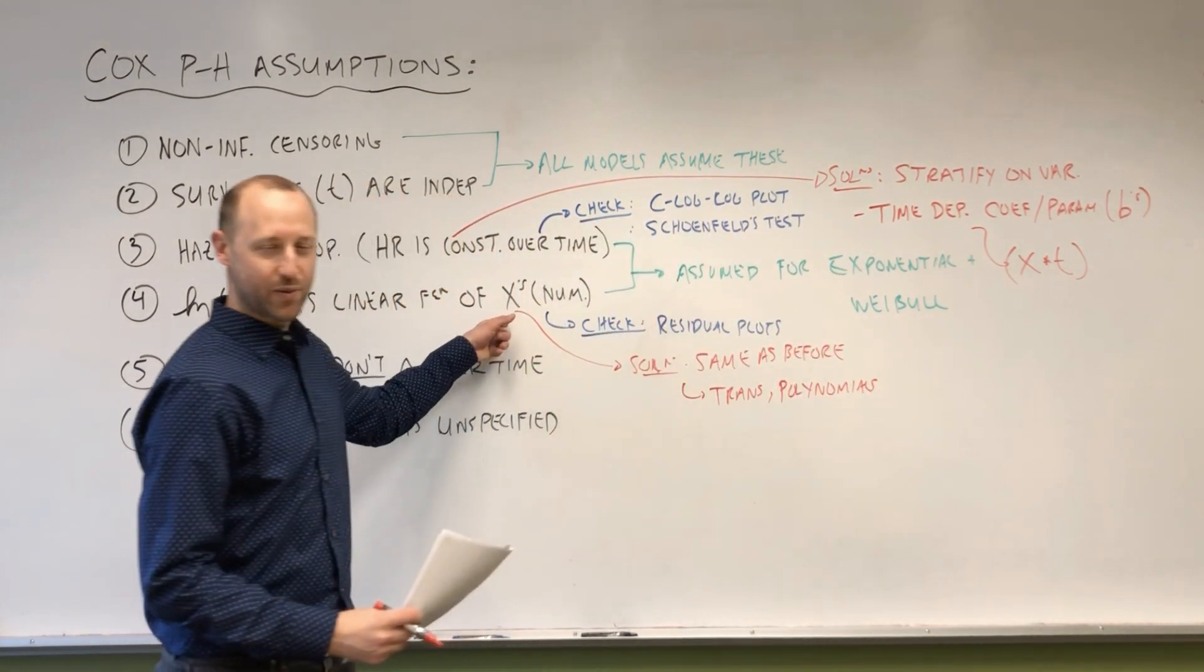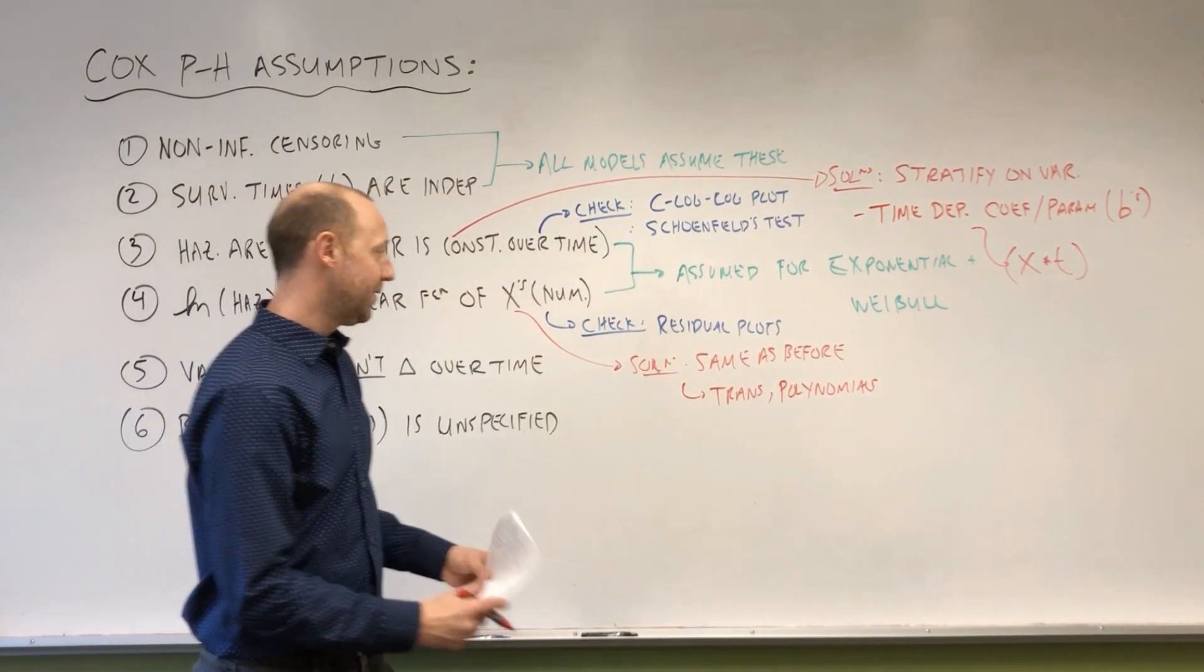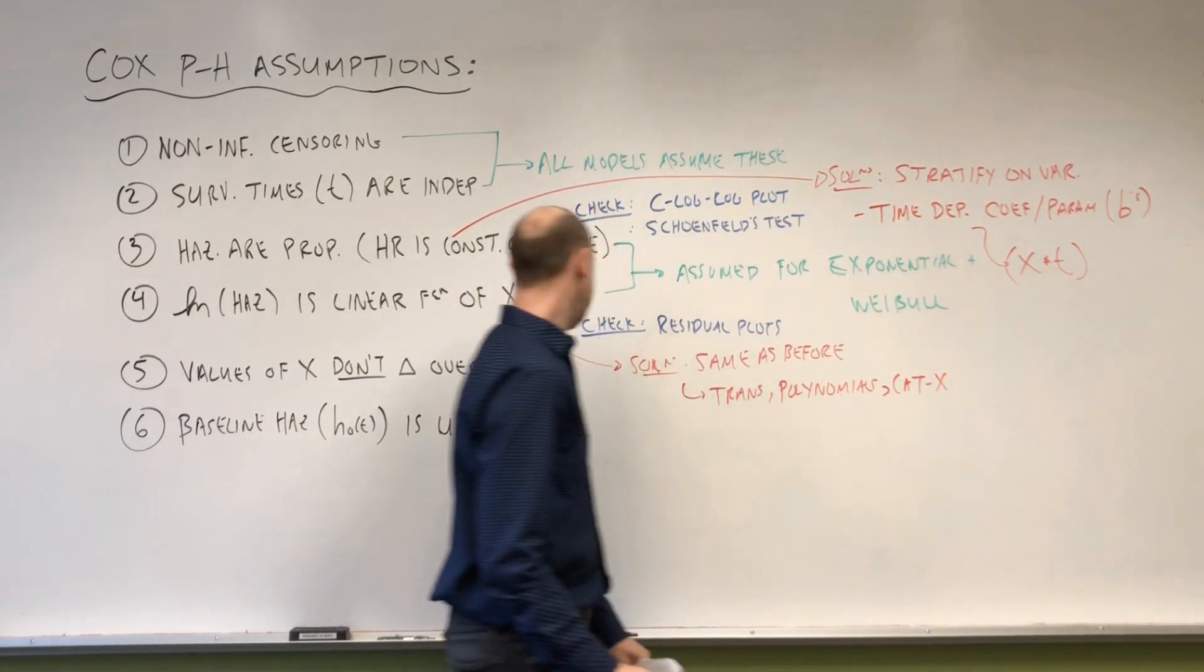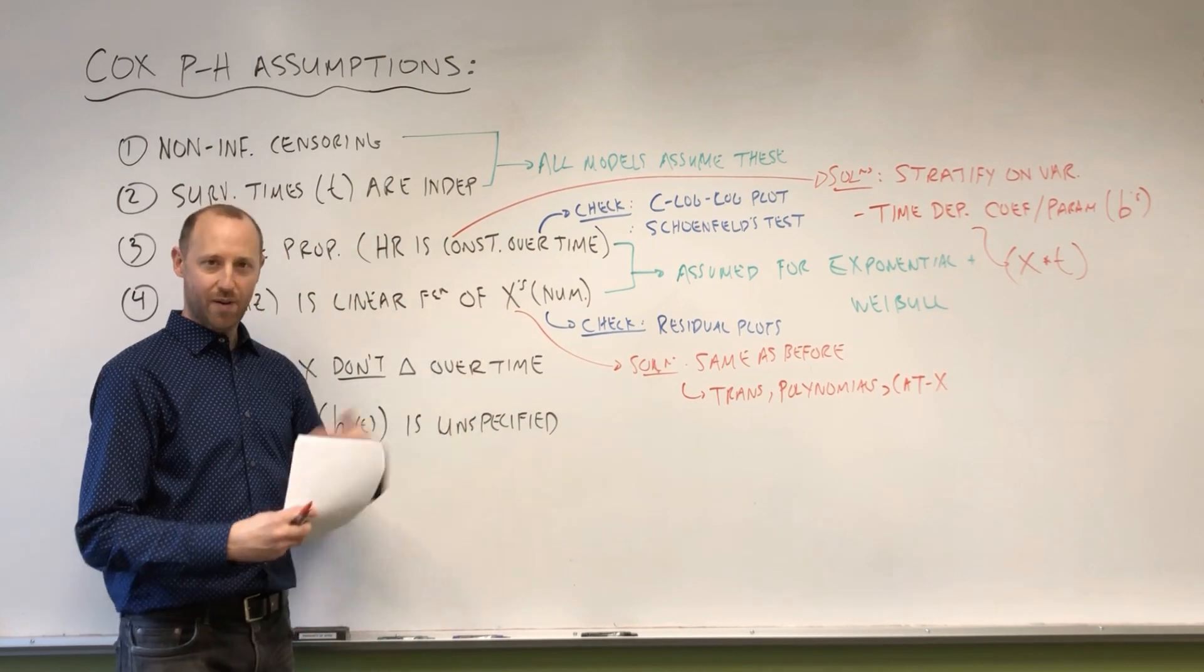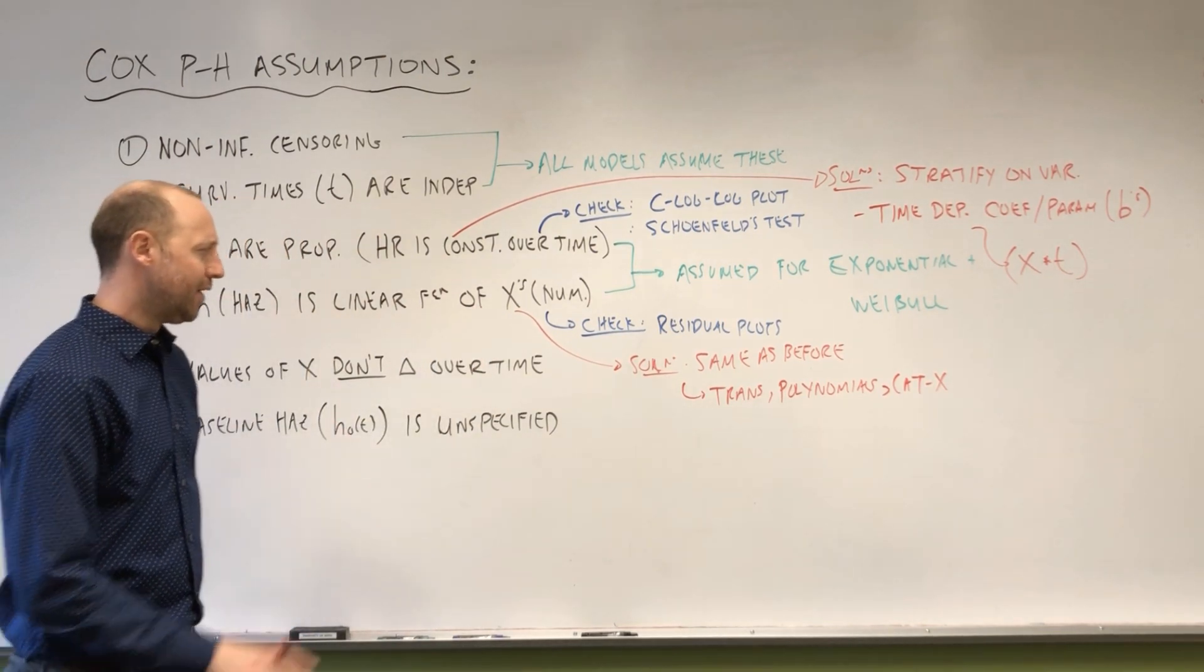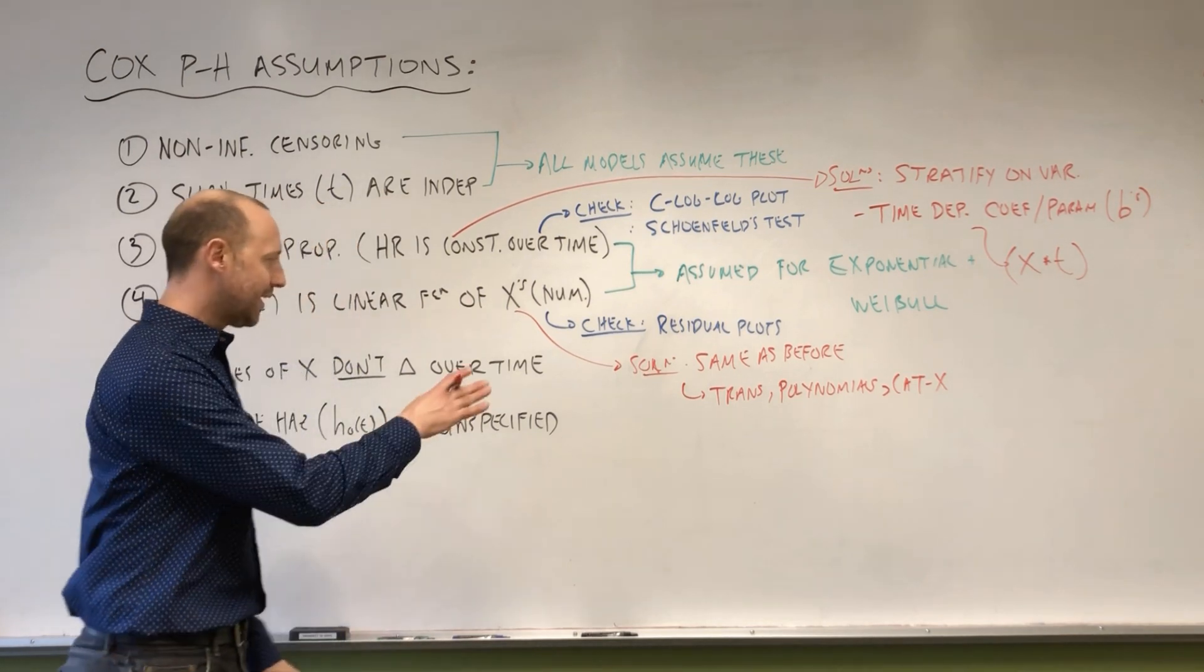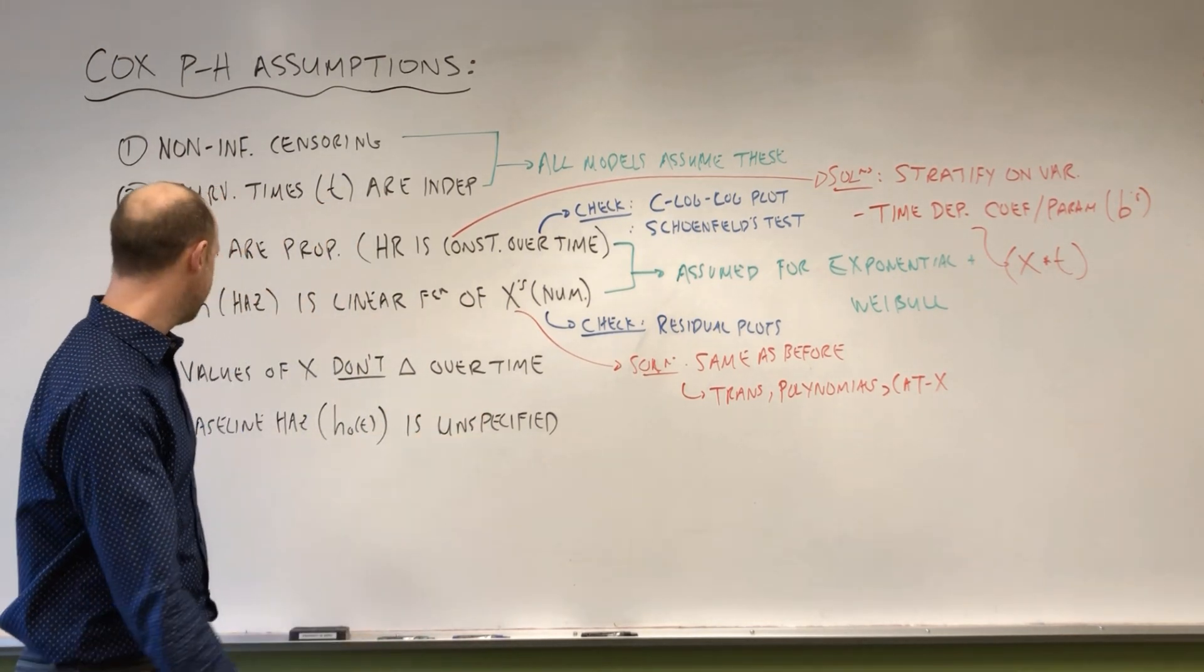We can include polynomials. So X and X squared, or X, X squared and X cubed. We can try categorizing X, so taking that numeric variable and creating categories. So all the same solutions we saw before. We can check them in the same way. We can implement them in the same way.